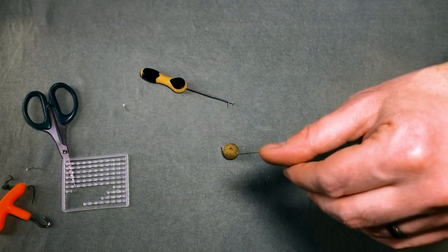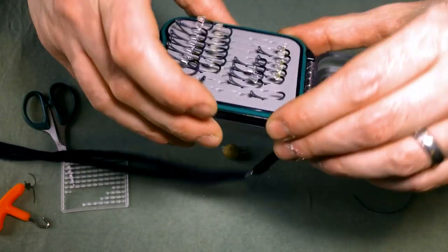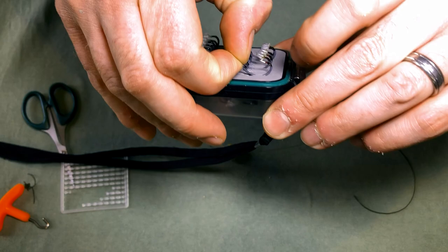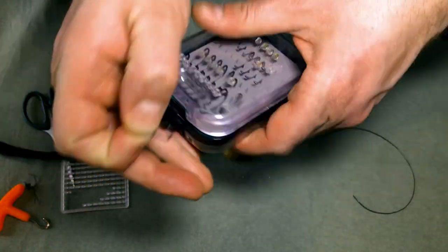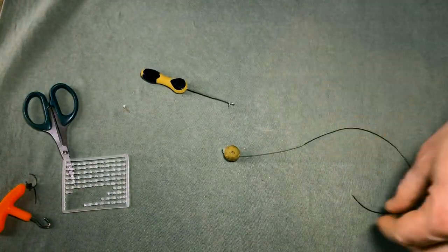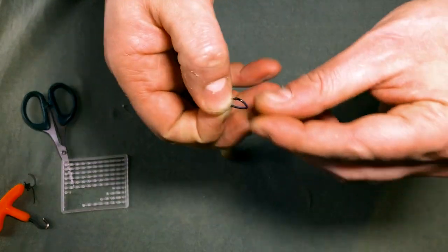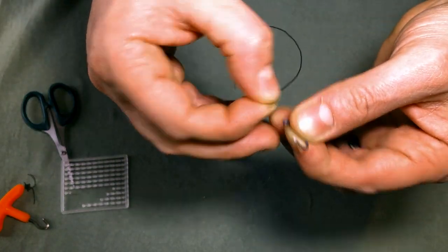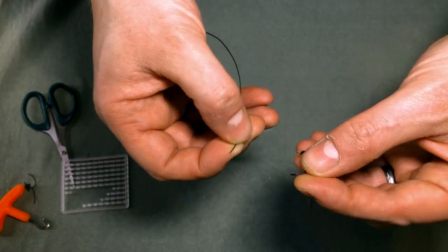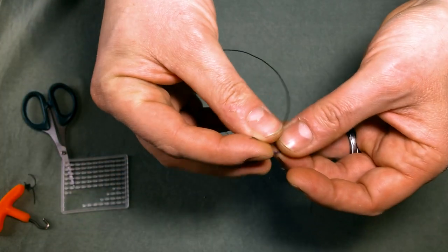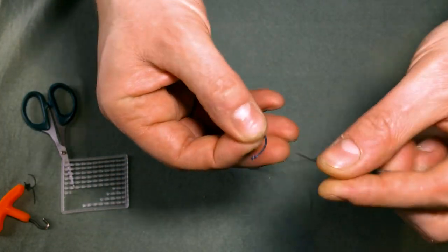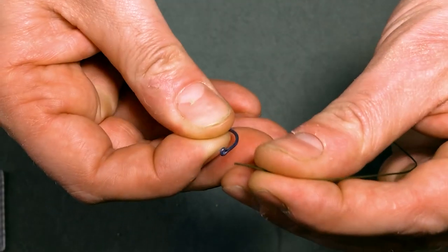So the next stage is to take your hook. As I said I'm using a size 6 curved shank hook for today's rig. You can use pretty much any pattern that you like. Wide gapes work quite well. As I said I'm using a curved shank today. So what you need to do is make sure you get the braid through the back of the eye, ready to tie your knotless knot.